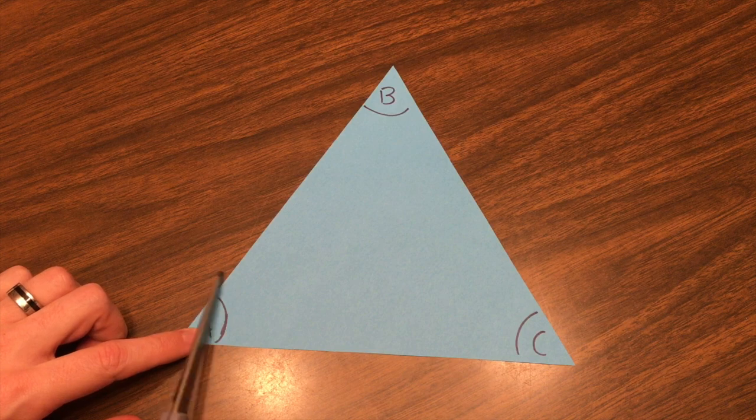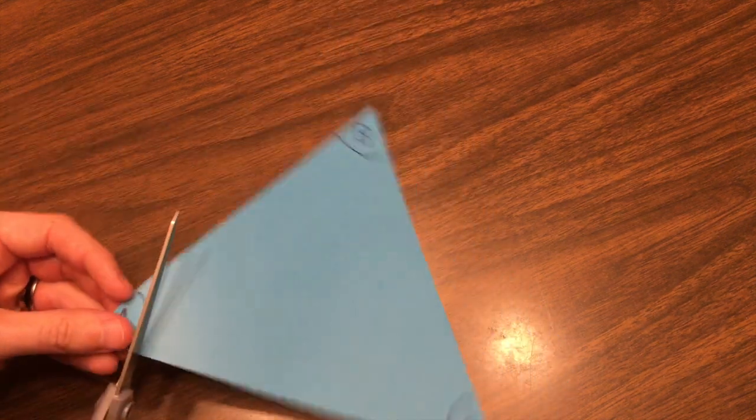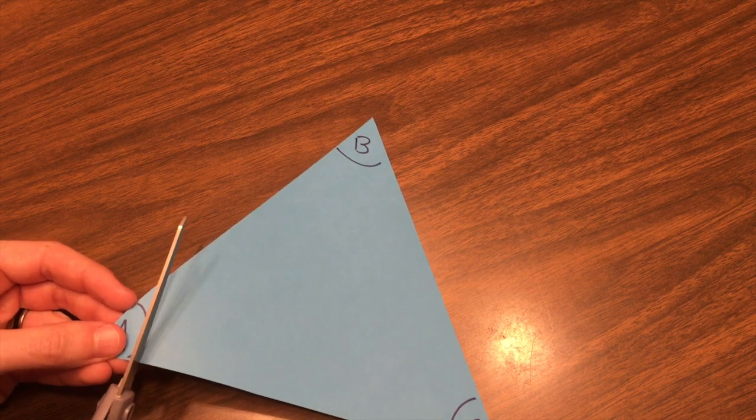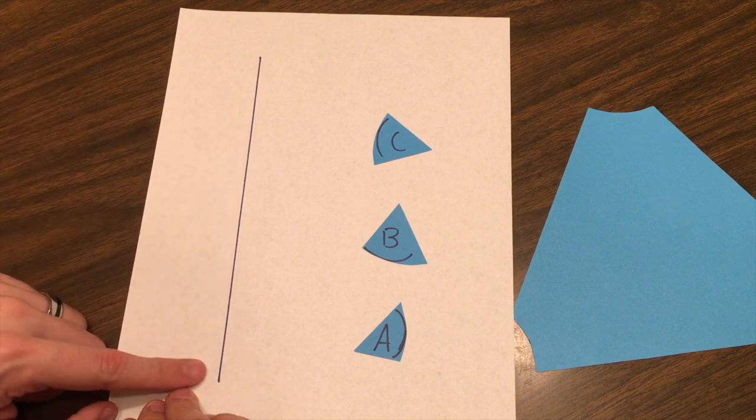What you're going to then do is cut out each angle. Using a straight edge, I drew a straight line on this piece of paper.